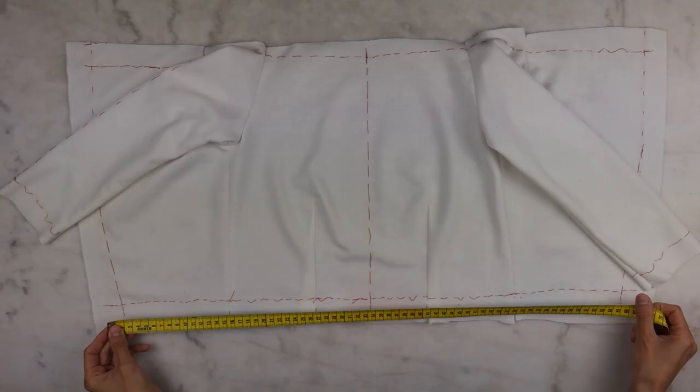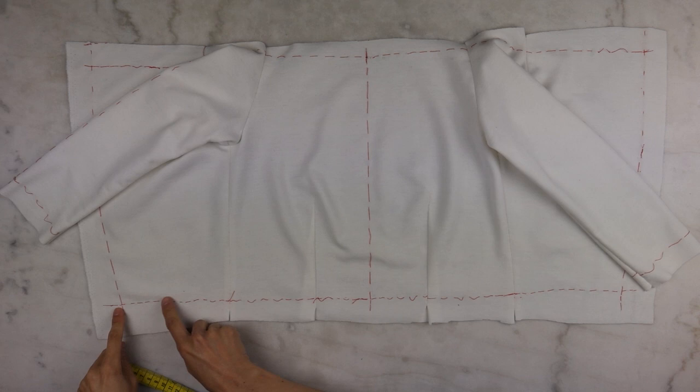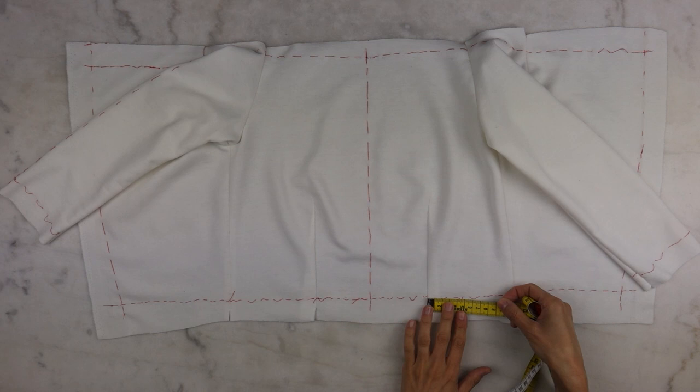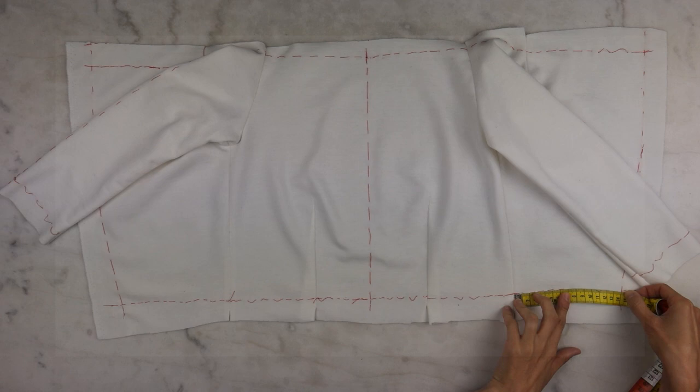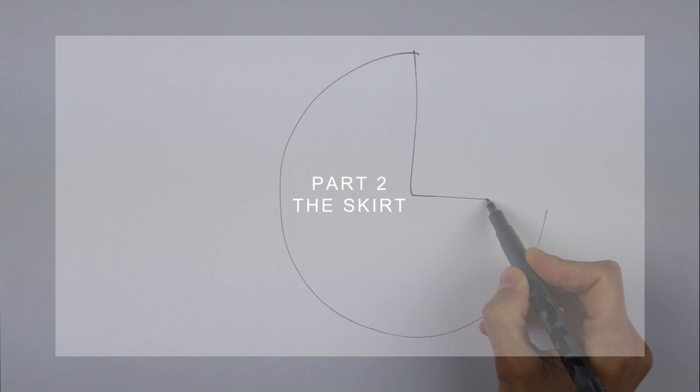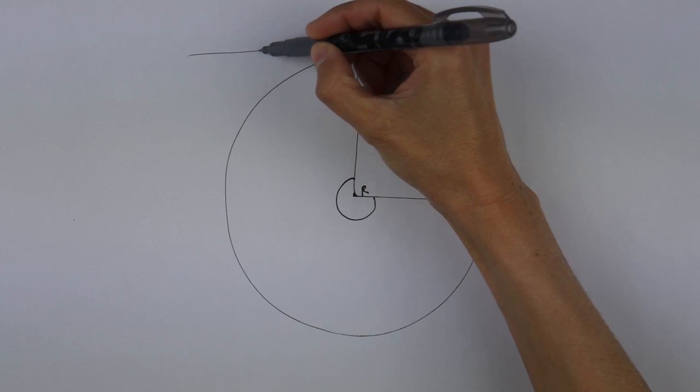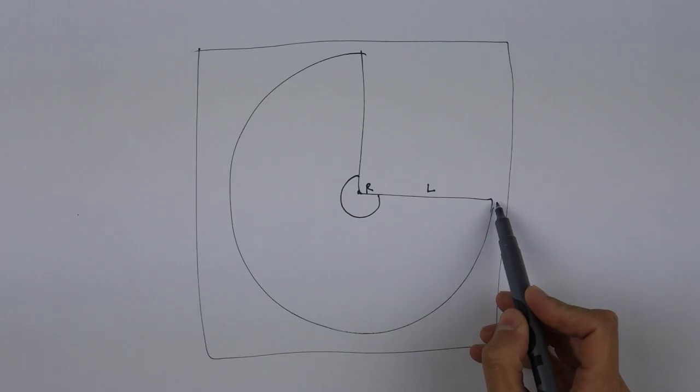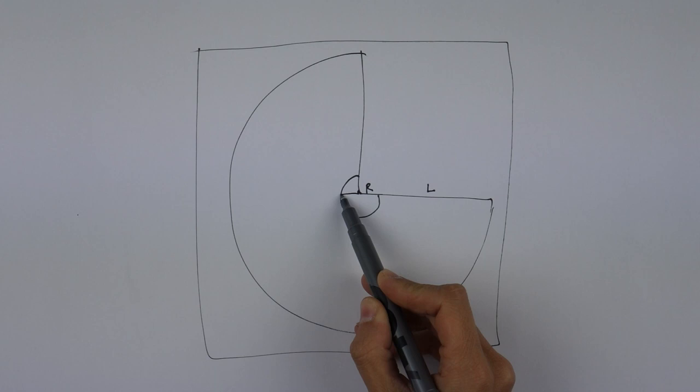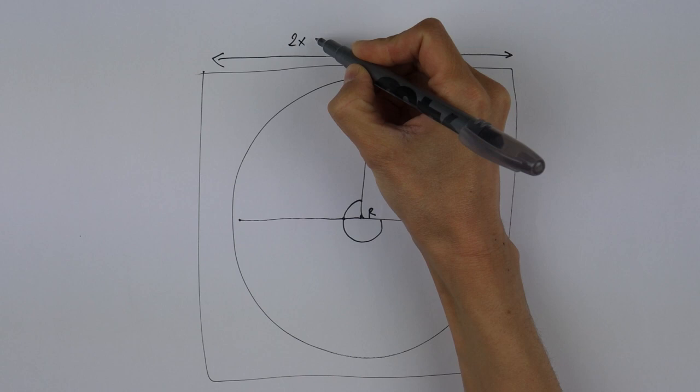We will need to check first our waist measurement, not on ourselves but on the bodice, because we added a little ease for breathing and stuff. We'll need as well the measurements between the darts and all the seams. The skirt we are creating is a simple three-quarter circle skirt, but we'll divide it into eight gores in order to save fabric since we have a very tight budget to keep.